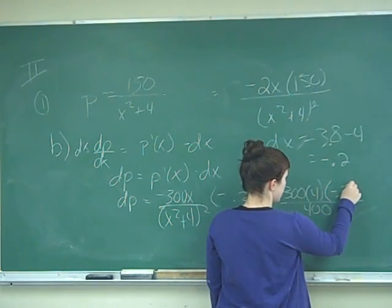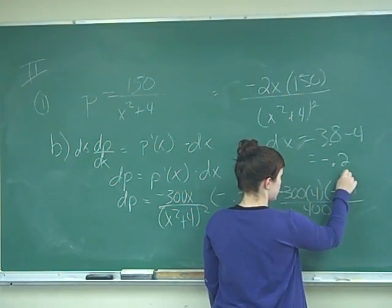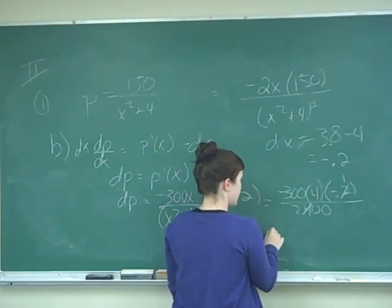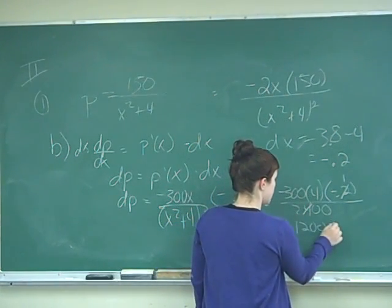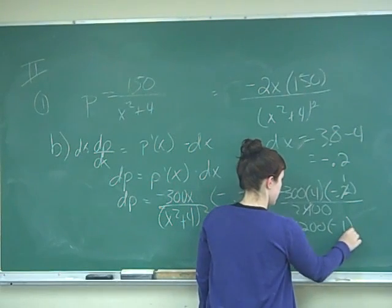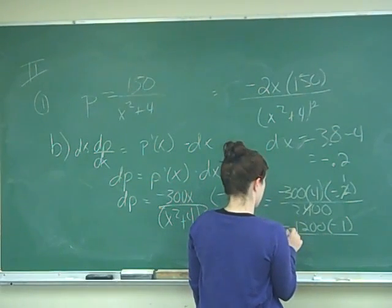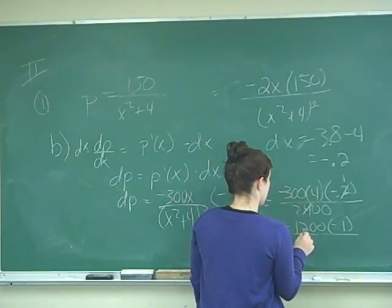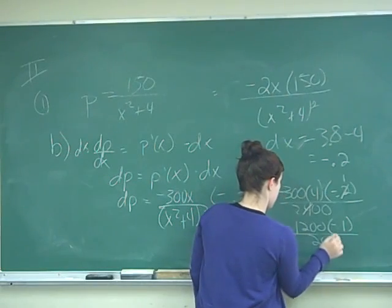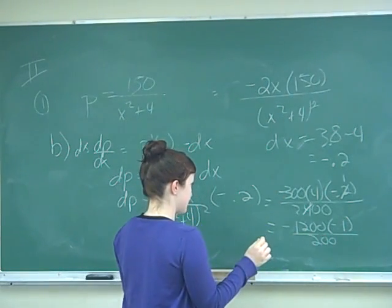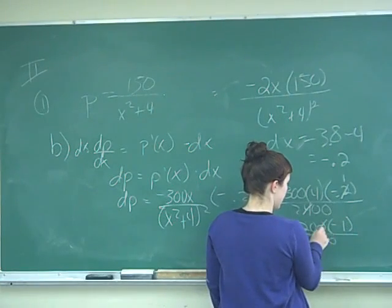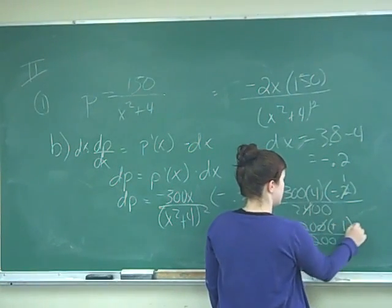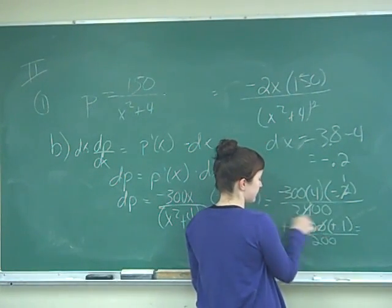I can cross out the 2, make it a 1, cross this out and make it a 2. That gives me negative 1,200 times negative 0.1, all over 200. And by multiplying by 0.1, I get rid of one zero, and it's negative times negative, so it's positive.